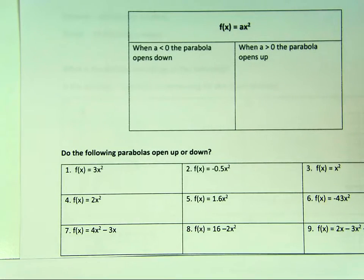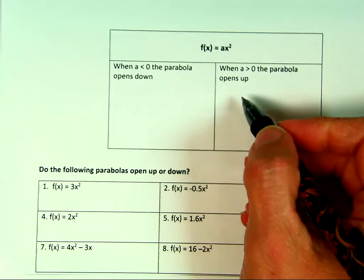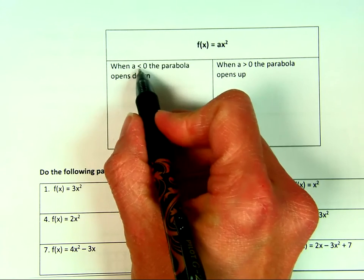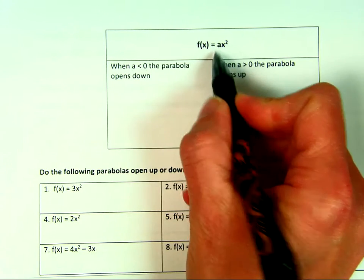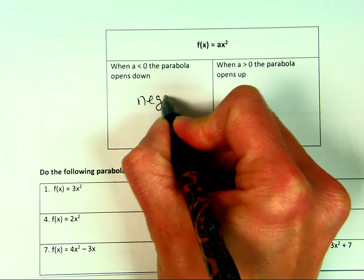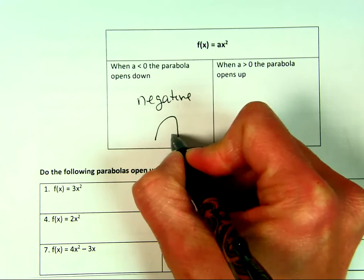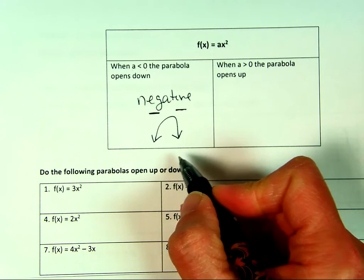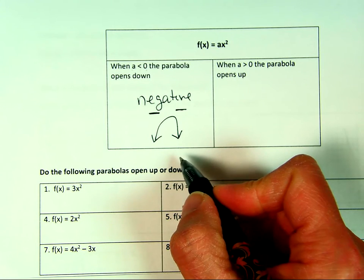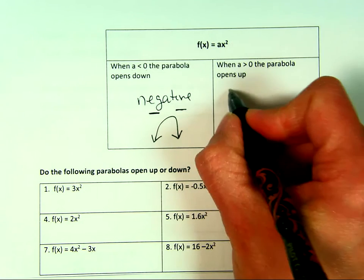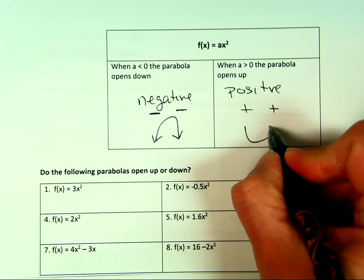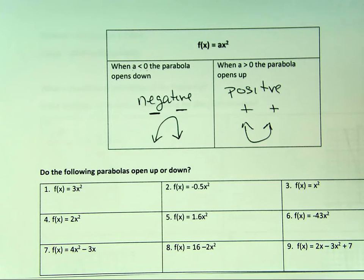Now let's talk about what makes a parabola open up or open down — and it's all about a. When a is less than zero, that means if the number out front is negative, we're going to have a sad parabola — it opens down. When a is positive, it opens up. Positive parabolas are happy!